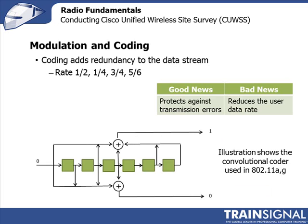Let's talk about coding first. In 802.11a and g — and for backward compatibility this coding is also supported in 802.11n along with additional coding capabilities — coding means literally adding redundancy to the data stream. For instance, bit 0 comes in, goes through the coder, and out comes two bits: bit 1 and bit 0. This is what we call a half-rate coder — one informational bit in, two bits out. So it's possible to lose one bit over the air and still recover your user data.